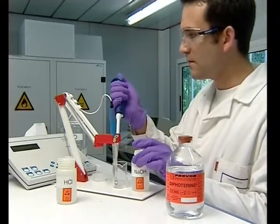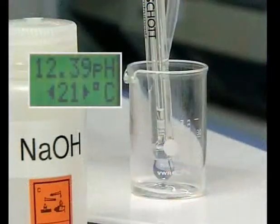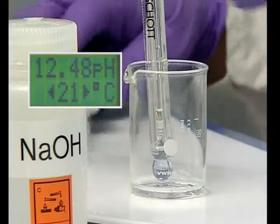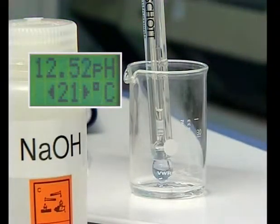First of all, we will take one milliliter of 1N caustic soda. The pH value is around 14, which means that it is strongly basic.